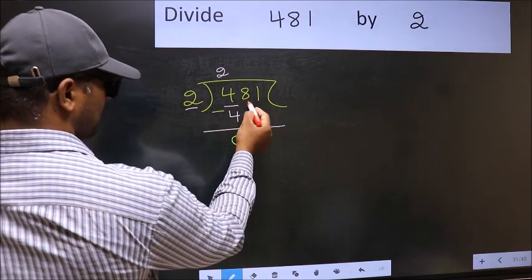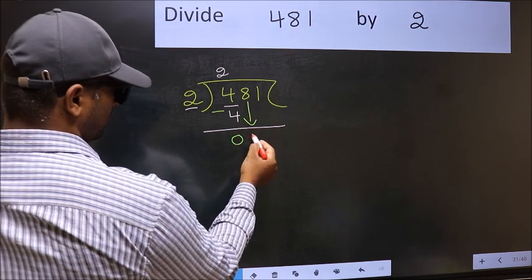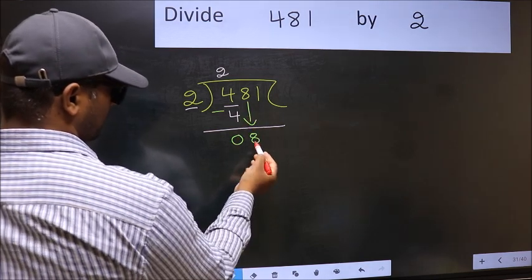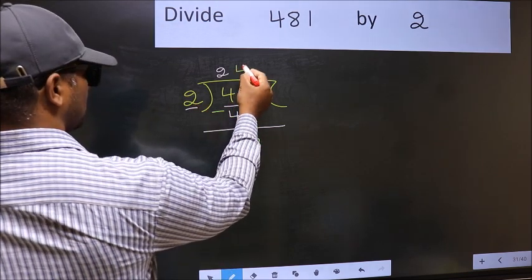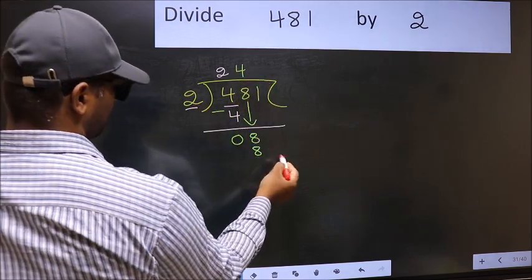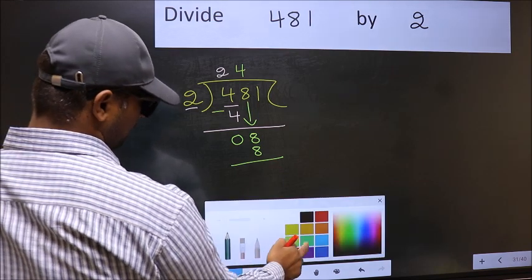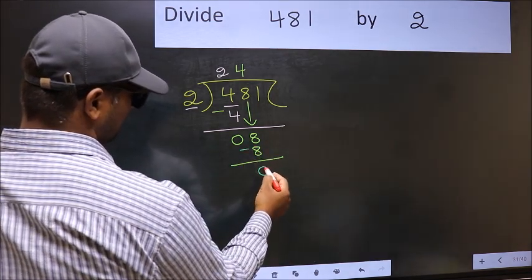After this, bring down the beside number. So, 8 down. Now, 8. When do we get 8 in the 2 table? 2 times 4 is 8. Now you should subtract: 8 minus 8 equals 0.